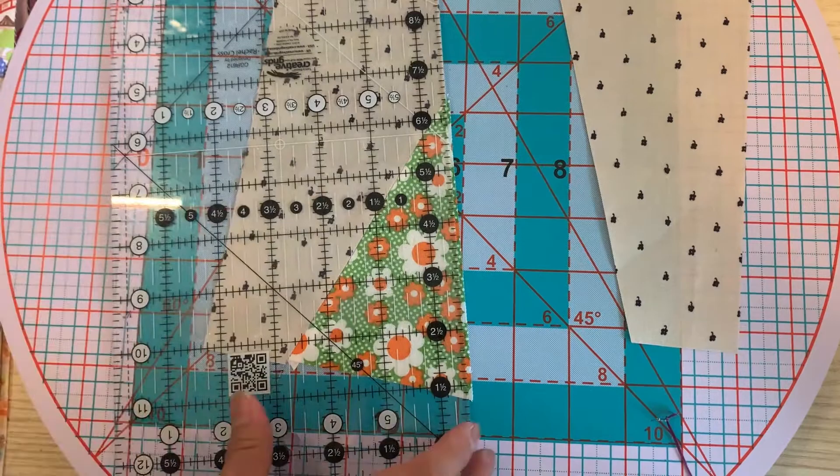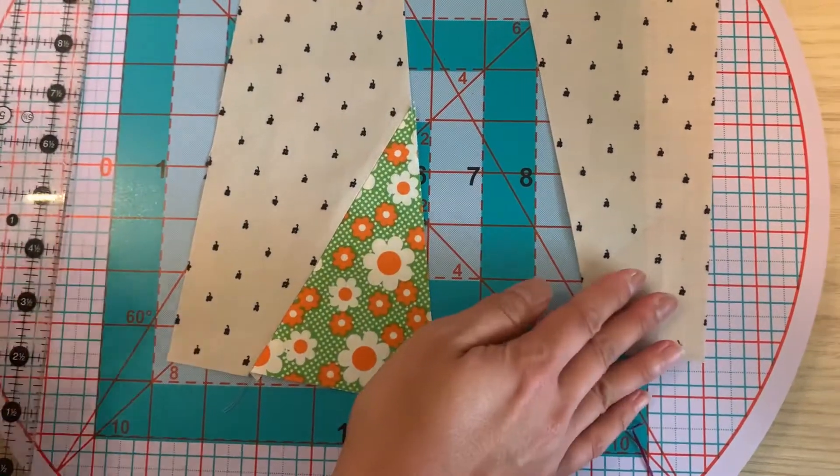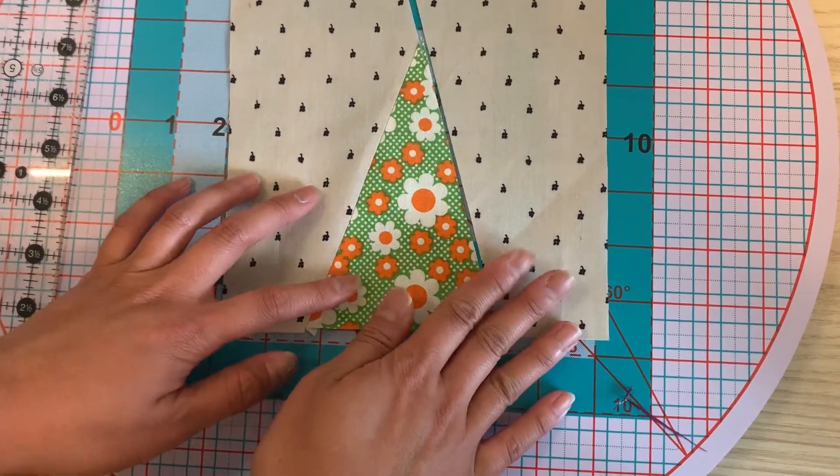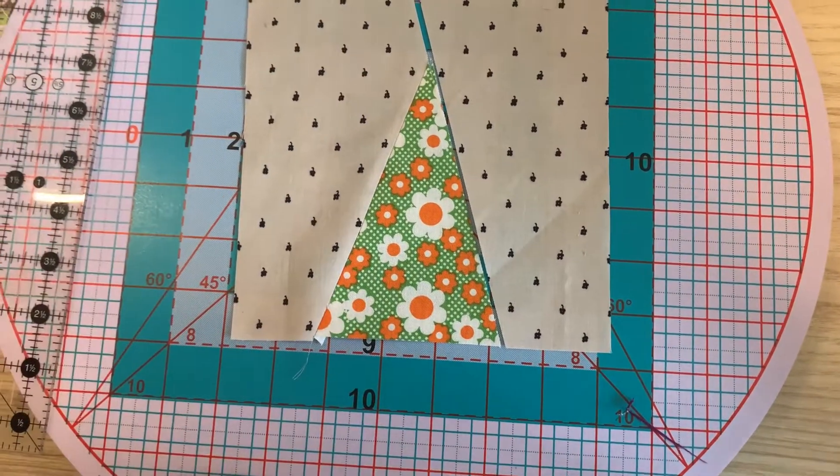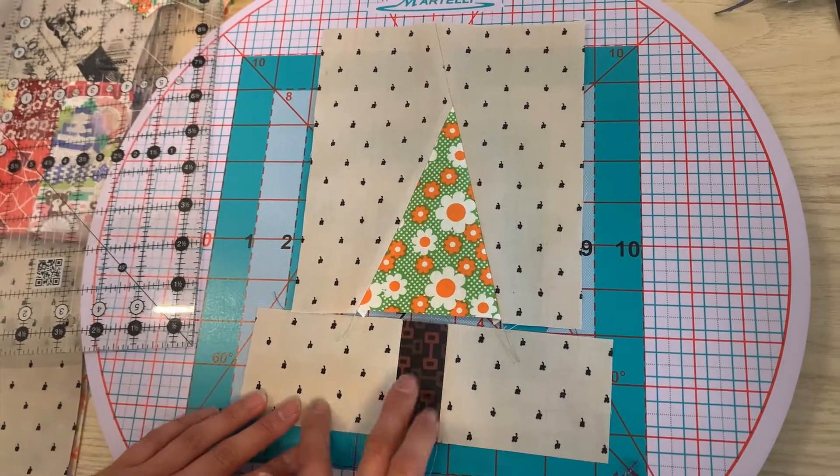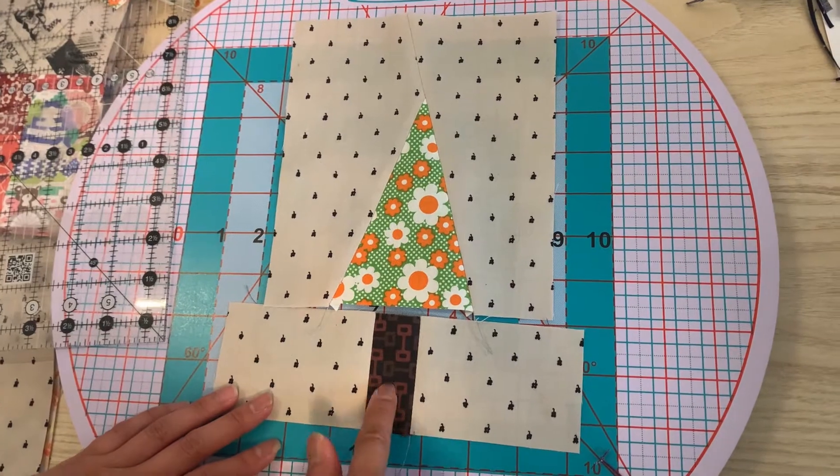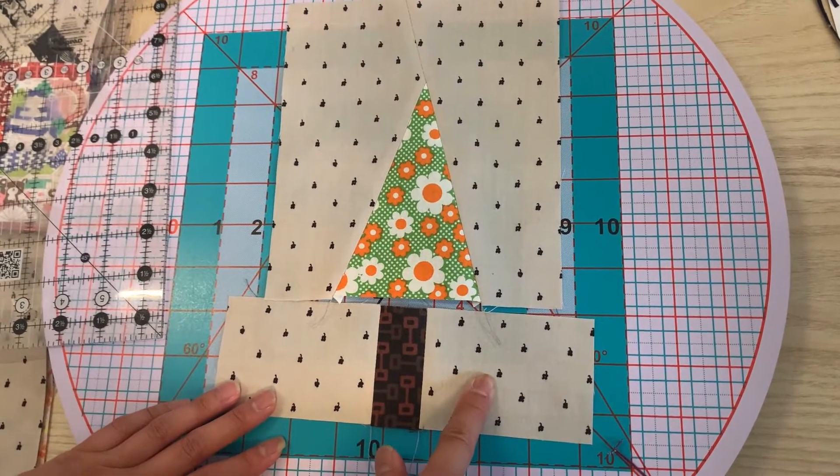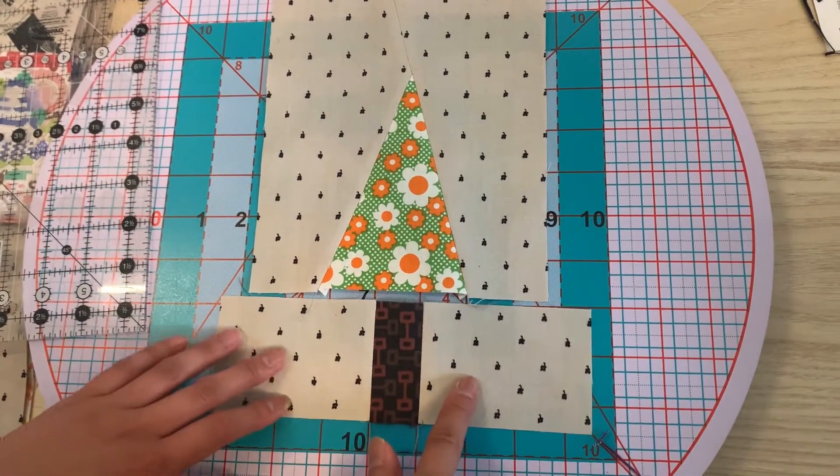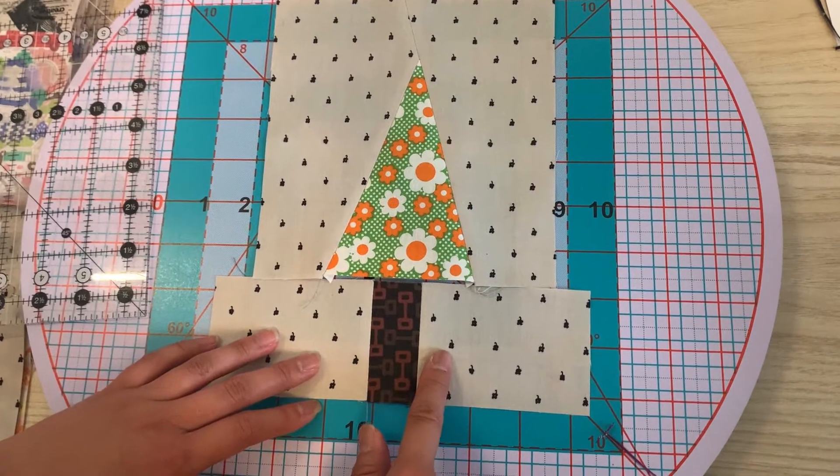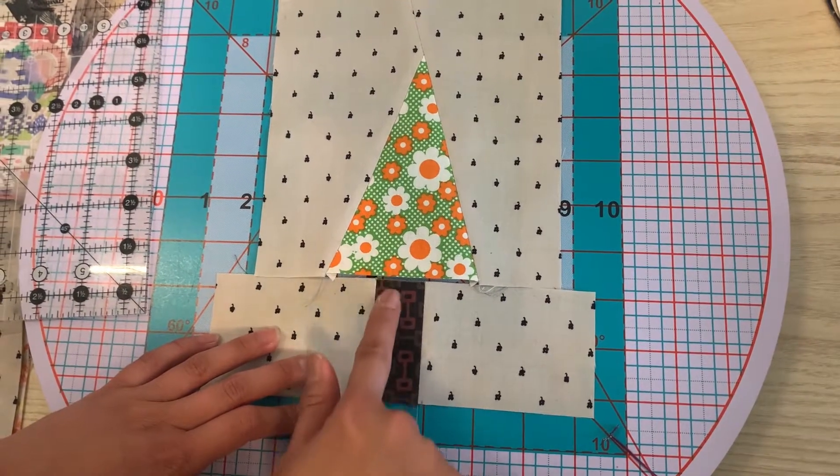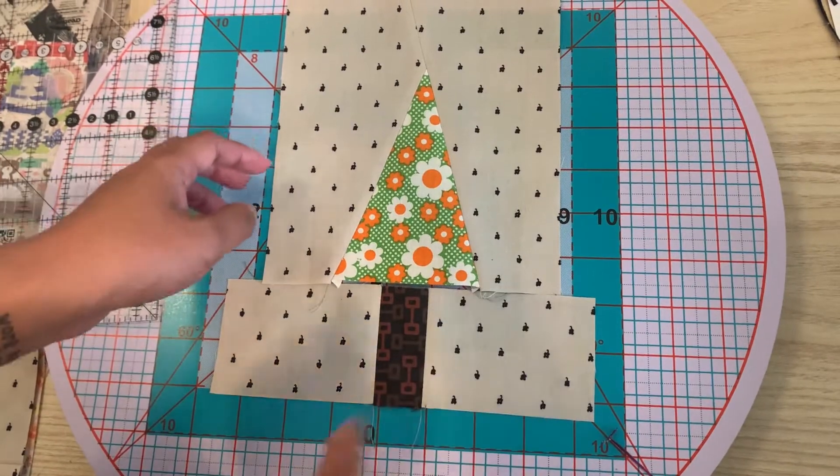Okay, and then I'm going to put that piece and that piece together and I'm going to sew that guy. Okay, I've sewn my trunk pieces, my background trunk and my other background piece. And what I'm going to do is I'm going to line that up with the center of the tree and then I'm going to sew this guy.